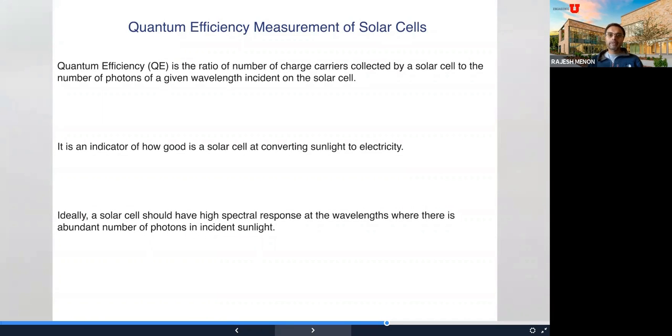Another thing you want to measure is something called quantum efficiency of a solar cell. This is simply defined as the ratio of the number of electrons or charge carriers collected by a solar cell or created by the solar cell to the number of photons of a given wavelength incident on the solar cell. Simply, if I have N photons going in and I have M electrons coming out of my solar cell, the quantum efficiency is simply M divided by N. Of course, the best case is 100%. One photon will give me one electron. This is a normal solar cell. It's an indicator of how good a solar cell is at converting light to electricity. It should have a high spectral response at wavelengths where there is abundant photons in the incident light.